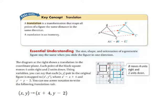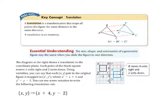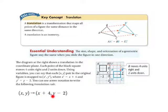A translation is a transformation that maps all points of a figure the same distance in the same direction. A translation is an isometry. Point A maps onto point A', point B maps onto point B', and point C maps onto point C'. The size, shape, and orientation of a geometric figure stay the same when you slide the figure in one direction. The diagram at the right shows a translation in the coordinate plane. Each point of the black square moves 4 units right and 2 units down. You can say that each ordered pair (X, Y) is mapped to (X', Y'), where X' equals X plus 4 and Y' equals Y minus 2. Using arrow notation, the translation rule is: (X, Y) maps onto (X plus 4, Y minus 2).